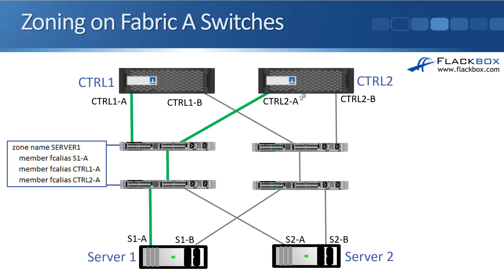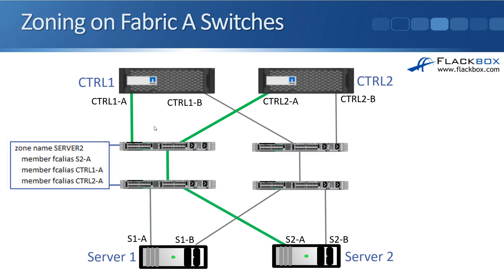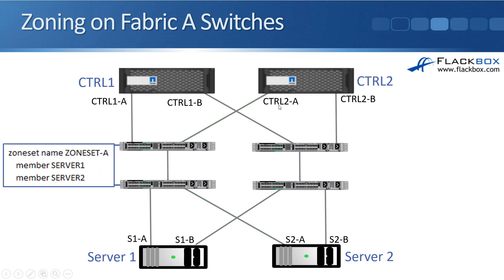When we configure zoning on the Fabric A switches, we configure a zone for Server 1 — called Zone Name Server 1 — with member alias S1A for Server 1 HBA port A. On the Fabric A side, it's connected to Controller 1 on HBA 1 and Controller 2 on its HBA 1. In that zone, we add Server 1A, Controller 1A, and Controller 2A to give the server access to the storage system over both paths. Server 2 is configured similarly, with S2A connecting to Controller 1A and Controller 2A. Both zones are then grouped into the zone set replicated across all switches in Fabric A.